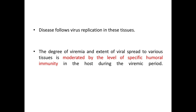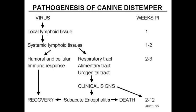The degree of viremia and extent of viral spread to various tissues is moderated by the level of specific humoral immunity in the host during the viremic period. The virus replicates in local lymphatic tissues of the respiratory tract like tonsils, and then moves on to systemic lymphatic tissues.